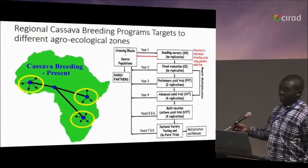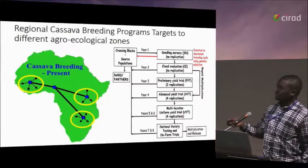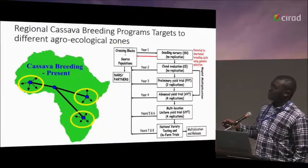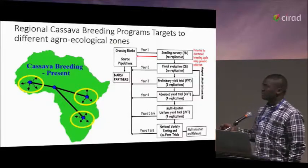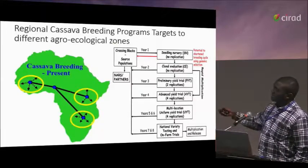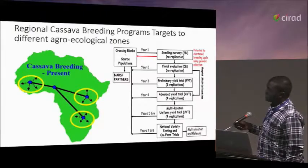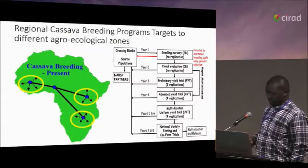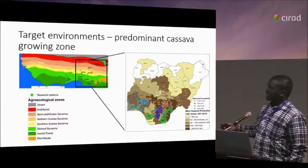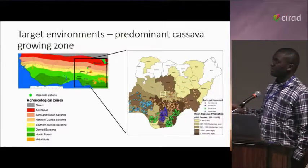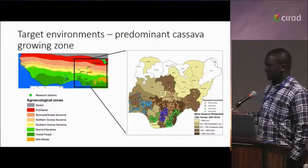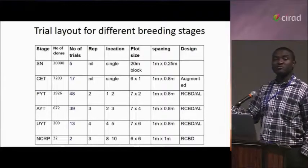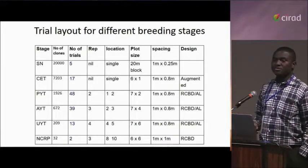Cassava breeding is done at IITA across all the hubs, from the West African hub to the East African hub to the South African hub, with headquarters around here. This gives us an overview of the different breeding stages in cassava — it takes about eight years to breed cassava. These are the predominant growing zones, showing the different agroecological zones, and this shows the number of plots with phenotype across all breeding stages — we generate a whole lot of data in cassava.